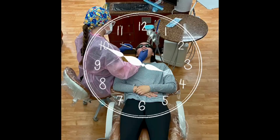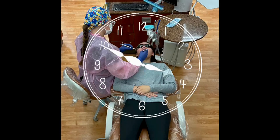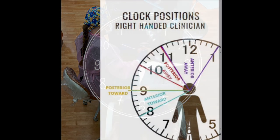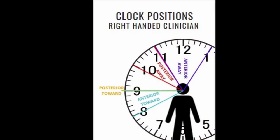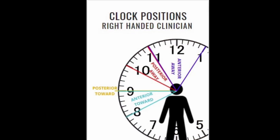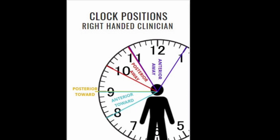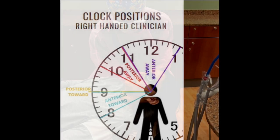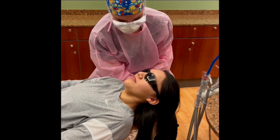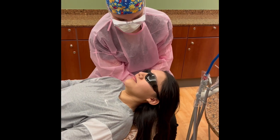Using an analog clock face as a guide, the patient's head is at 12 o'clock and the feet are at 6. Right-handed clinician's clock positions range from 8 to 1 o'clock. The patient's head can also be adjusted to better facilitate clinician vision and ergonomics.